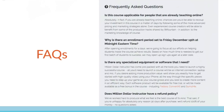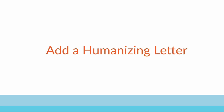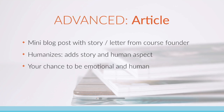Here's an example from the Profitable Teacher: 'Is this course applicable for people who are already teaching online? Why is there an enrollment period? Is there specialized equipment needed? Does Million Dollar Instructor have a refund policy?' You can also add a humanizing letter to your online course. We think of this as an advanced option — a nice to have, not a need to have. Don't let this stop you from putting your course live.